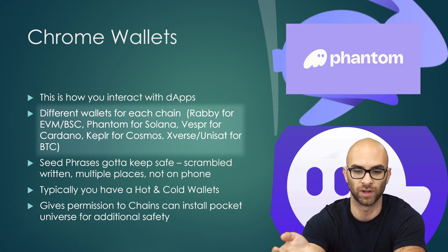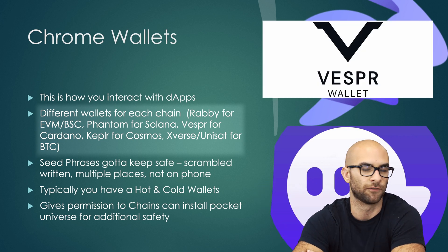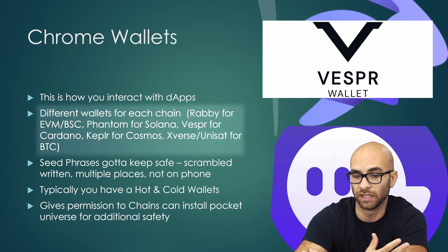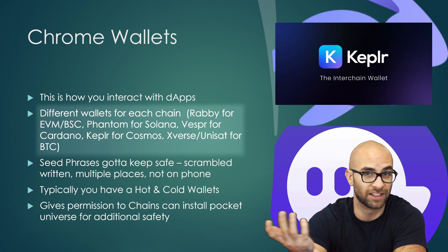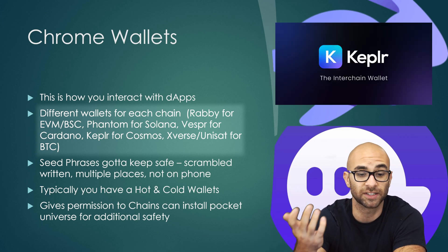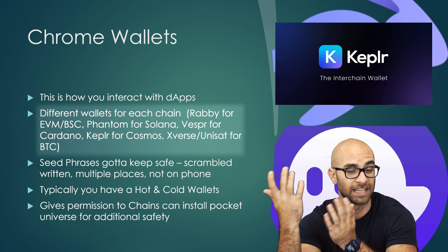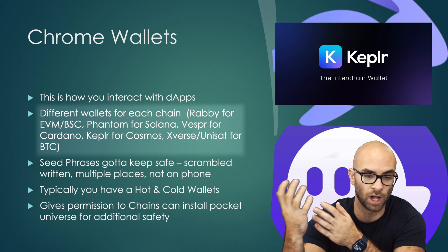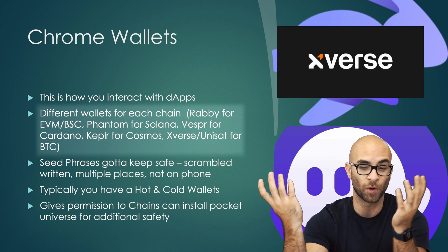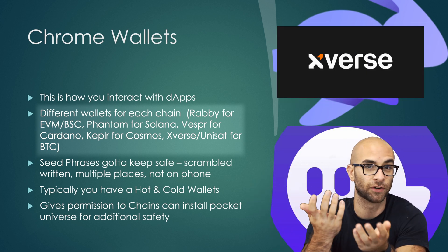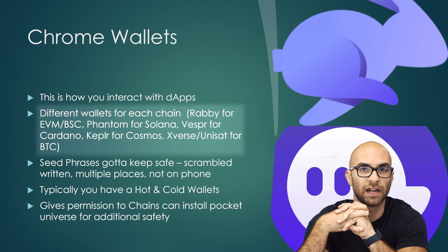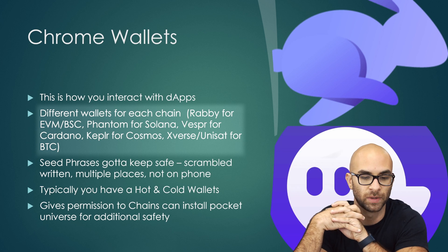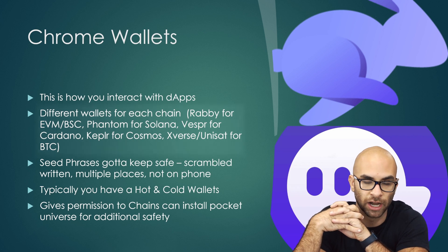For Solana you're going to need Phantom. If you want to use Cardano, maybe you need Vesper or Nami. For the Cosmos ecosystem you're going to need Kepler or Leap wallet. For Bitcoin you're going to need Xverse or Unisat. So you'll see there are a lot of different types of Chrome extensions out there.